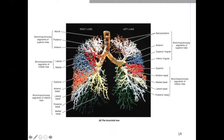Looking at the branching in a cadaveric picture where the different structures and cartilages have been dyed from the lungs: we had our trachea coming down, splitting into primary bronchi, then secondary and tertiary. The different colors represent the ending regions of each bundle of tertiary bronchi heading out into different areas of the lungs. When looking at the lungs, it ends up looking more like a sponge compared to a balloon in structure.